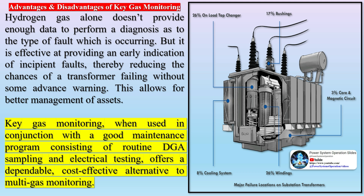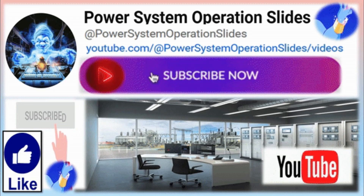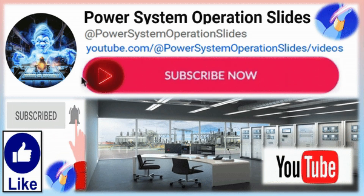Advantages and disadvantages of key gas monitoring: hydrogen gas alone doesn't provide enough data to perform a diagnosis as to the type of fault which is occurring. But it is effective at providing an early indication of incipient faults, thereby reducing the chances of a transformer failing without some advance warning, which allows for better management of assets. Key gas monitoring, when used in conjunction with a good maintenance program consisting of routine DGA sampling and electrical testing, offers a dependable, cost-effective alternative to multi-gas monitoring.